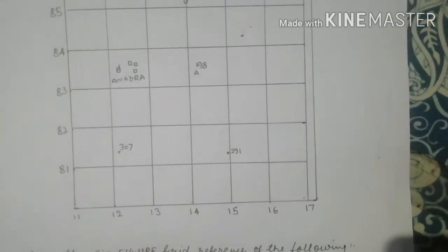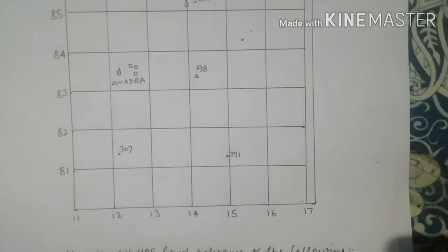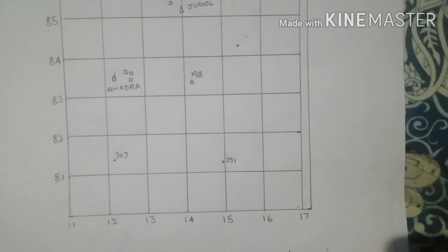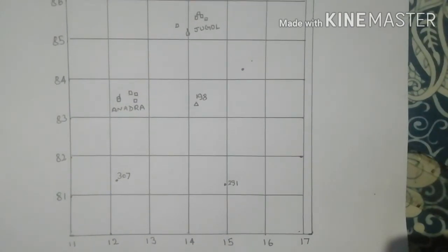The vertical lines have values 11, 12, 13. You already know that these vertical lines are known as Eastings, and the horizontal lines with values 81, 82, 83, 84 are known as Northings.